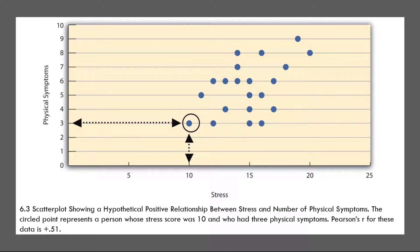Correlations between quantitative variables are often presented using scatter plots. Figure 6.3 shows hypothetical data on the relationship between the amount of stress people are under and the number of physical symptoms they have. Each point in the scatter plot represents one person's scores on both variables. For example, the circled point in Figure 6.3 represents a person whose stress score was 10 and who had three physical symptoms. Taking all the points into account, one can see that people under more stress tend to have more physical symptoms — a positive relationship in which higher scores on one variable tend to be associated with higher scores on the other; they move in the same direction, either both up or both down.